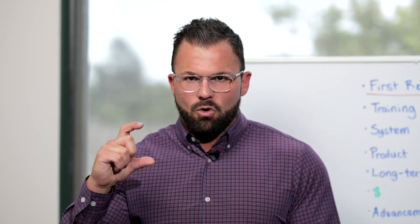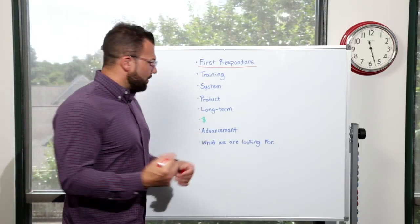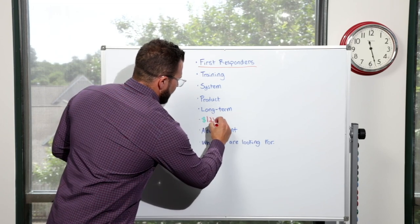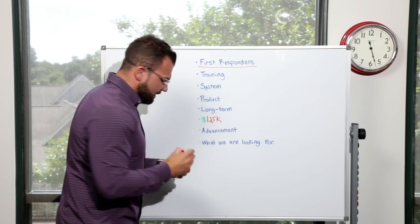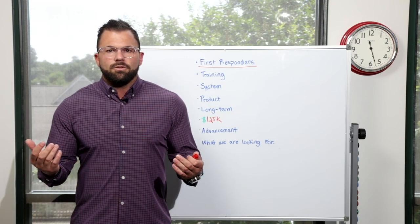Now, what does the money look like? Well, just by meeting our minimum requirement, which is 70 policies a month, and we'll go over how you're able to do that and actually do that pretty easily, that's going to generate $125,000 in income a year.